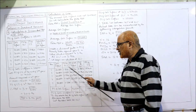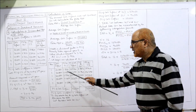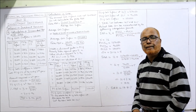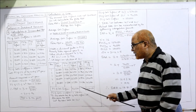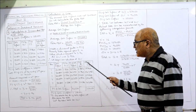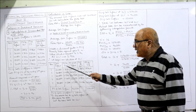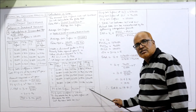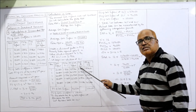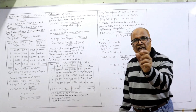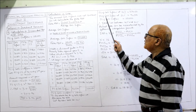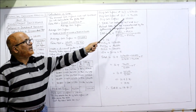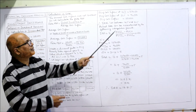At 16%, referring the table, PV factors are used to multiply cash inflows: 20,000 × 0.862, 30,000 × 0.743, and so on. Total PV of cash inflow at 16% is 1,07,050. Since at 16% it's more than 1 lakh and at 21% it's less than 1 lakh, the IRR lies between 16% and 21%.